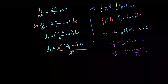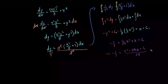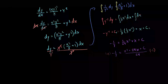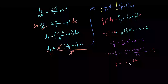From here, we can multiply both sides by negative 1 and take the reciprocal of both sides. What we're left with is y is equal to negative 24 over x to the third plus 24x plus c.